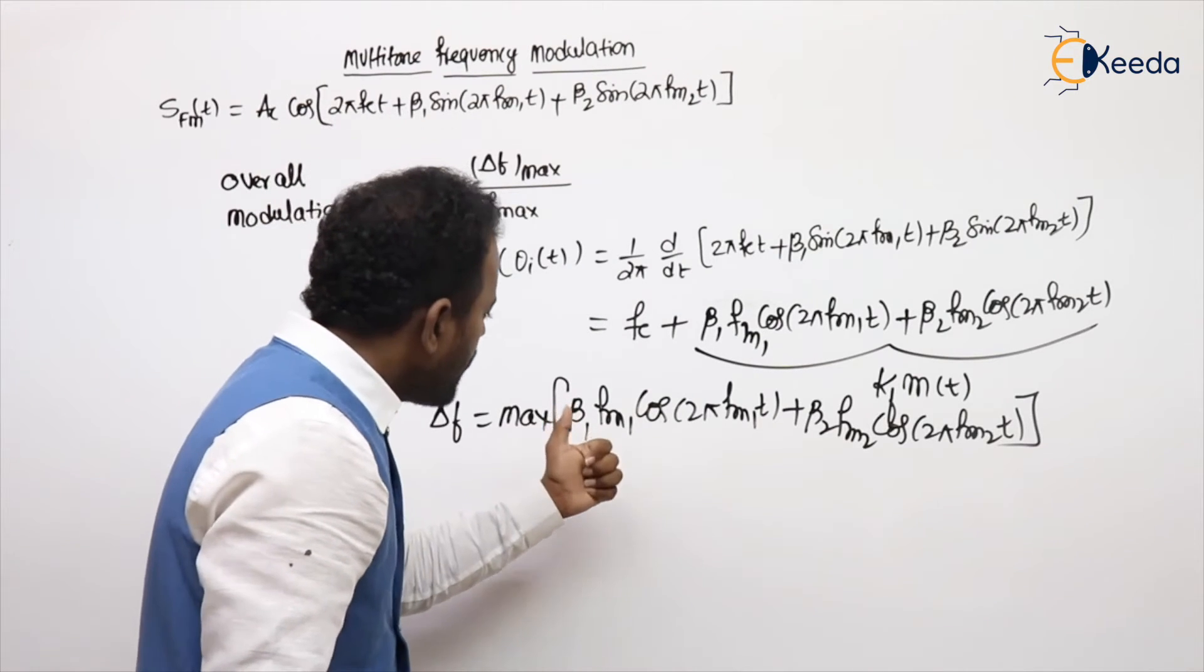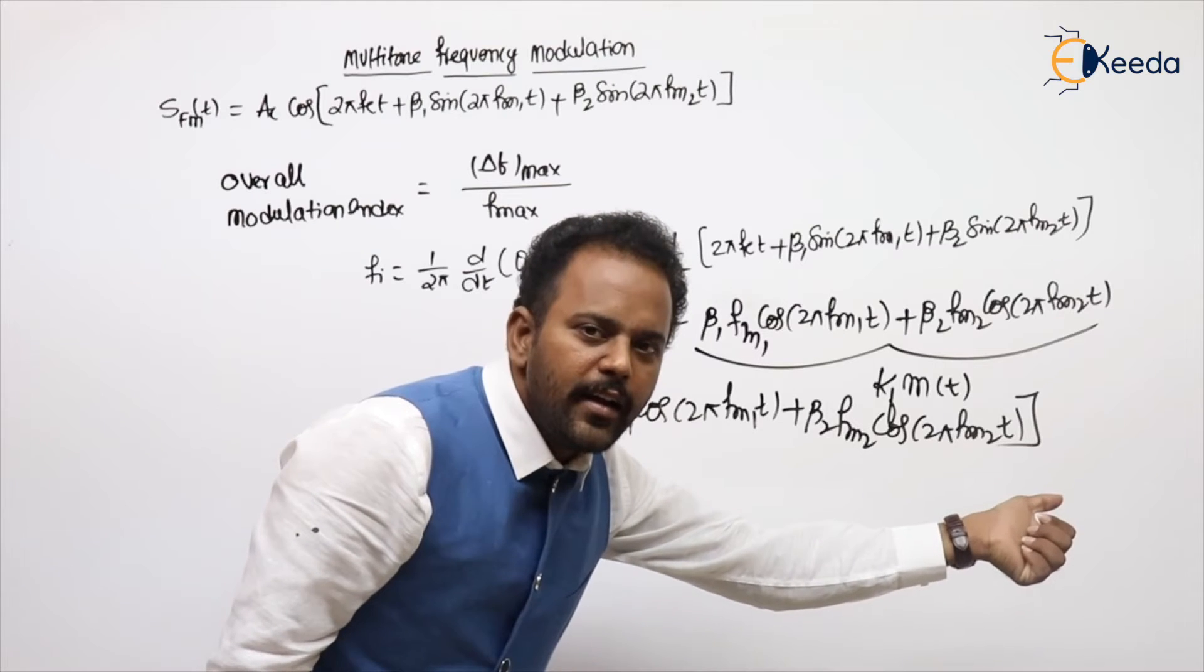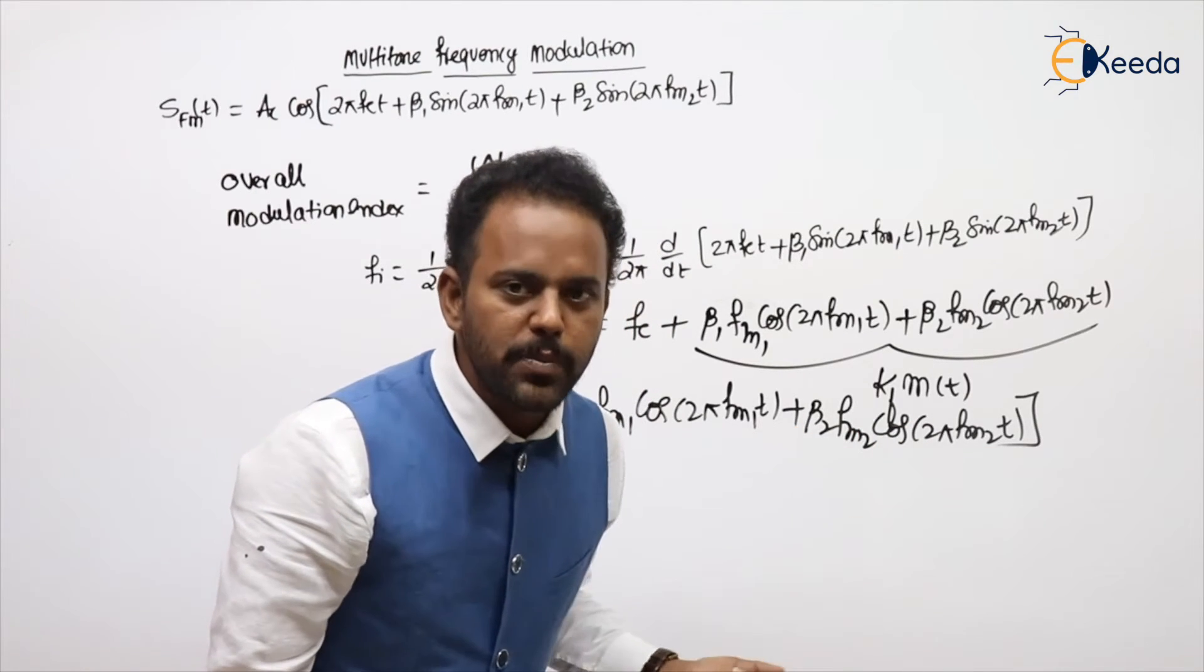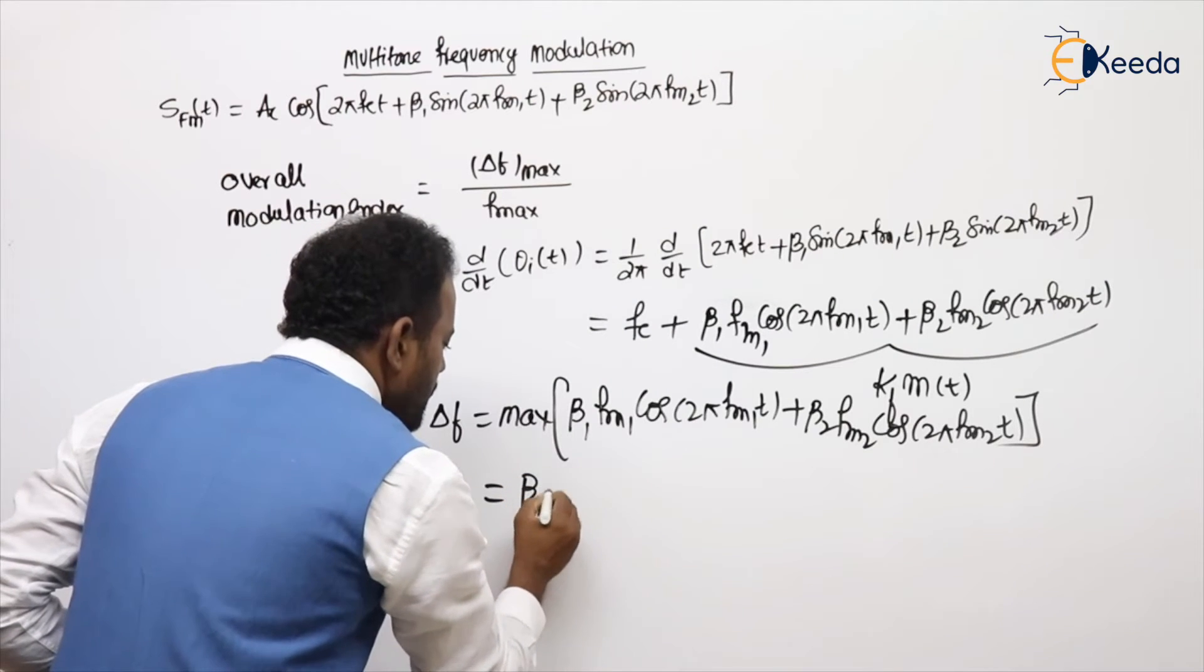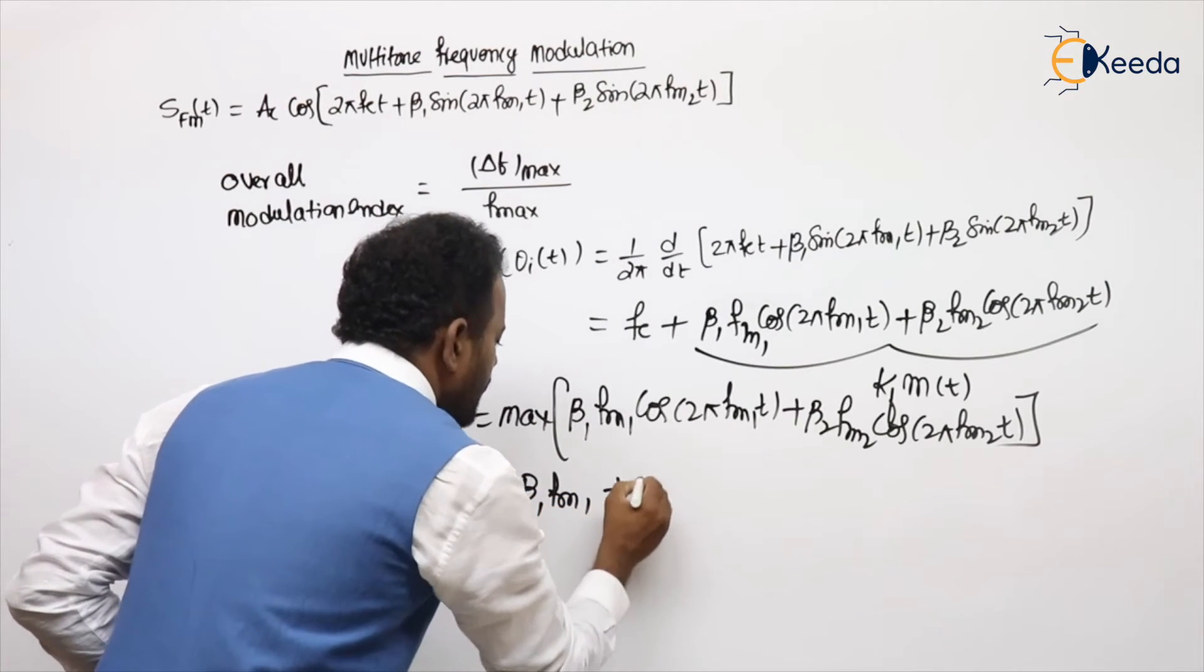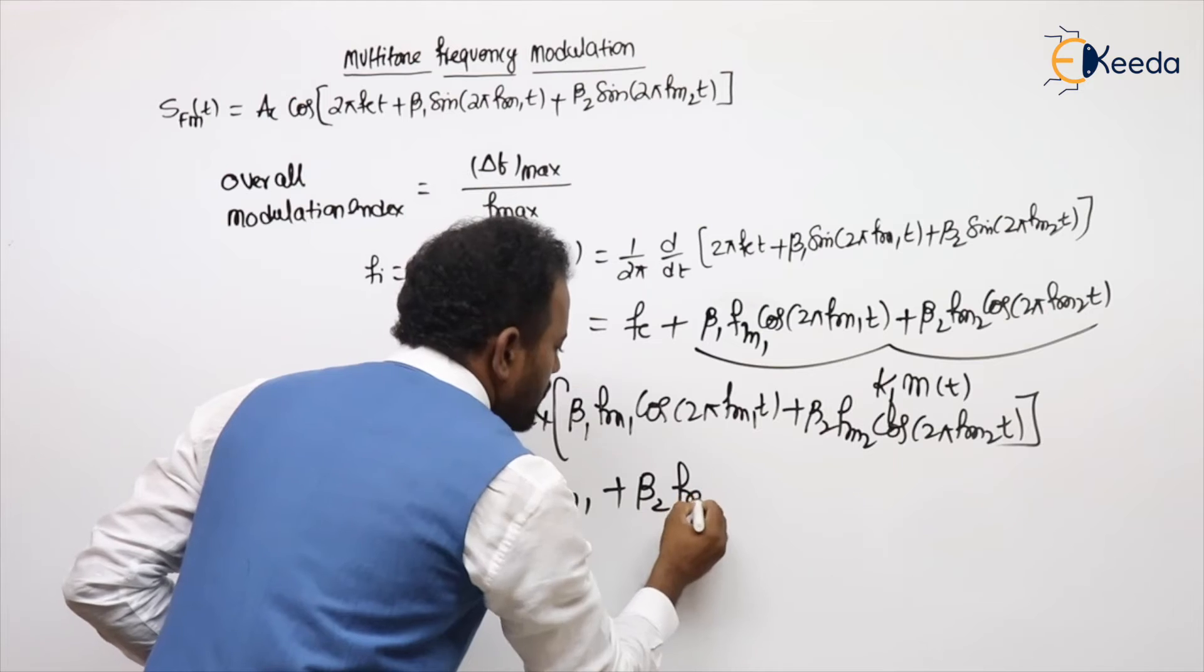Max value of a cos plus b sin is a plus b: β1 fm1 plus β2 fm2.